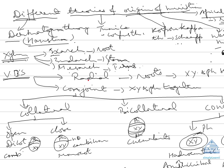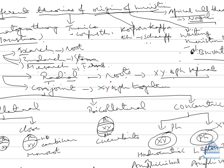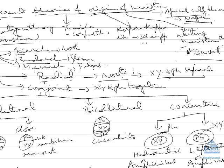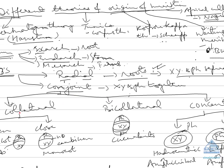Then comes vascular bundle, the arrangement of vascular bundles are of different types. First is radial, if xylem and phloem are separate, then we call radial vascular bundle, example all roots. Then conjoined vascular bundle, if xylem and phloem are kept together, then we call it conjoined vascular bundle.